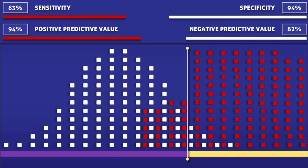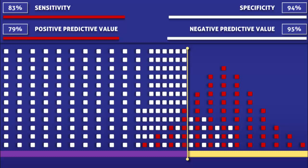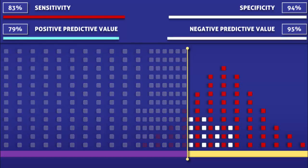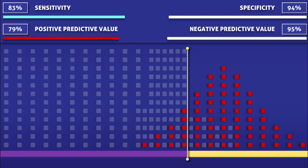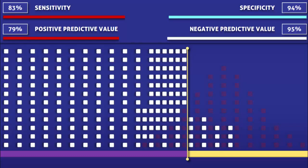Lastly, let's see what happens when the prevalence of the condition decreases. A decrease in prevalence correlates with a lower positive predictive value and a higher negative predictive value. The sensitivity and the specificity remain unchanged. The negative predictive value has increased because now a greater proportion of people with a negative test actually do not have the condition. The positive predictive value has decreased because now a lesser proportion of people with a positive test actually have the condition. The sensitivity and specificity were not affected because the numbers and ratios of true positives, false negatives, true negatives, and false positives remain exactly the same.